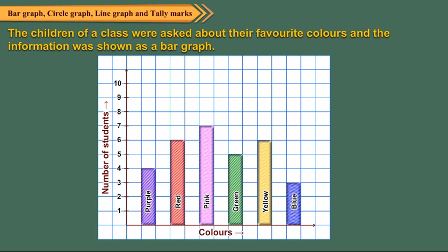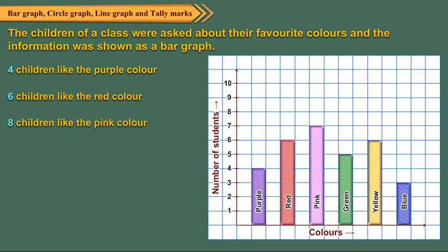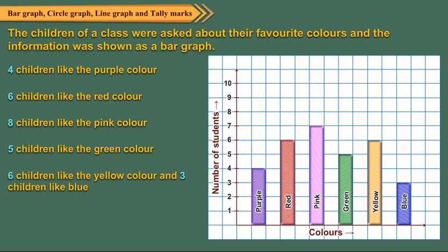From the bar graph we see that 4 children like the purple color, 6 children like the red color, 8 children like the pink color, 5 children like the green color, 6 children like the yellow color, and 3 children like blue. It means there are 32 students in the class.